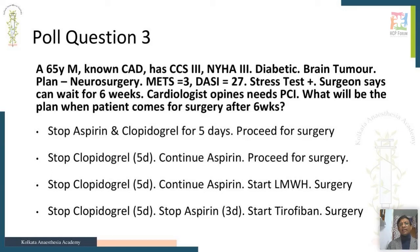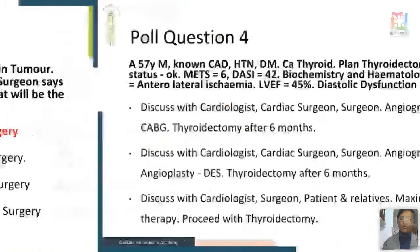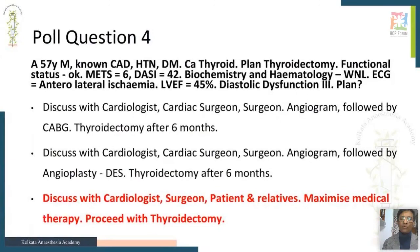Poll answer 3 (neurosurgery): In neurosurgery, even a 5 ml hematoma can have catastrophic neurological consequences, so you stop both antiplatelet agents and then proceed. This illustrates that the type of surgery fundamentally changes the management approach. Poll answer 4 (thyroidectomy, stable CAD, good functional status): prophylactic revascularization has no role. The correct answer is to maximize medical therapy and proceed with thyroidectomy, then address the coronary artery disease after surgery.